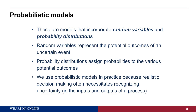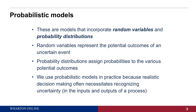Along with a random variable comes a probability distribution, and the probability distribution is used to assign probabilities to the potential outcomes. If we're talking about a fair die, there are going to be six potential outcomes, and fair means that each outcome would have probability one-sixth. We use these probabilistic models in practice because, to be realistic in our decision-making, we often have to acknowledge that we don't have absolute certainty in the inputs, and consequently there's going to be uncertainty associated with the outputs as well.